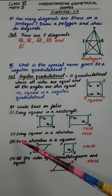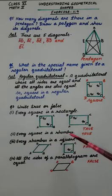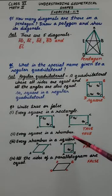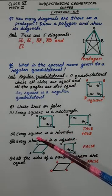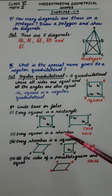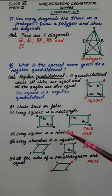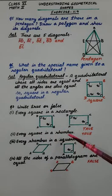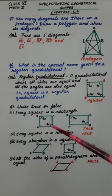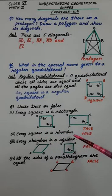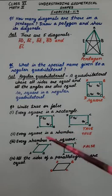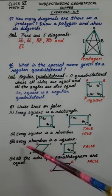Second one: every square is a rhombus. Yes, it is also true. Because in a square all sides are equal, and in a rhombus also all sides are equal. So yes, every square is a rhombus.